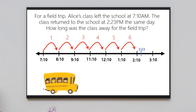That will give us to 2:10. Then from 2:10 to 2:23 we have to jump 13 more minutes. So our answer would be 6 hours and 13 minutes.